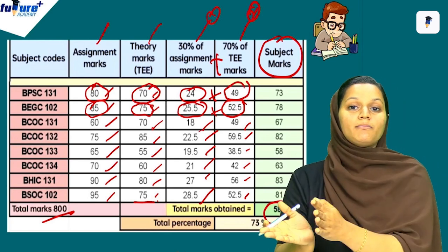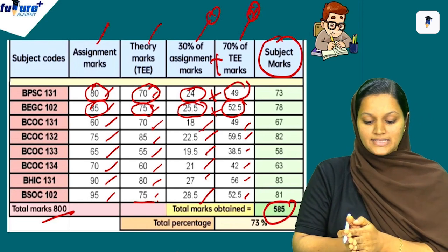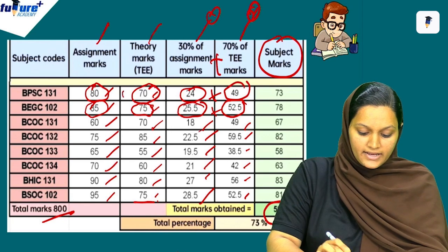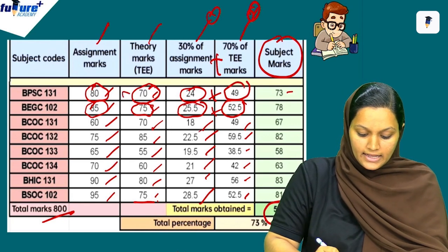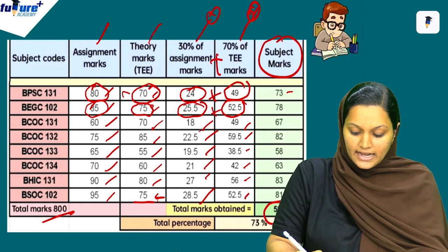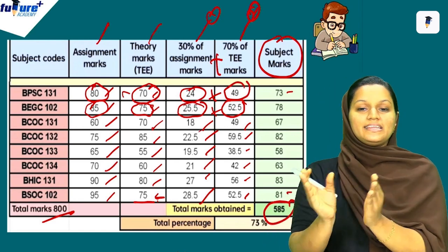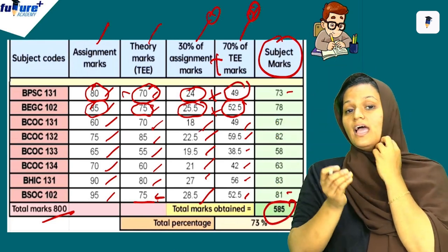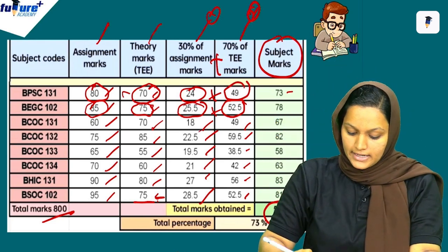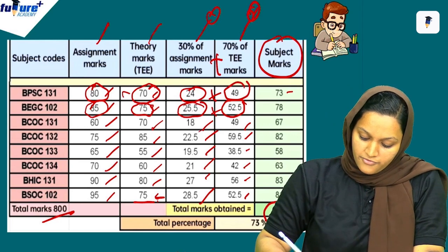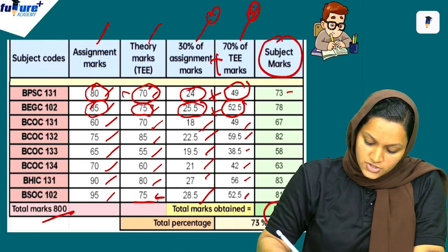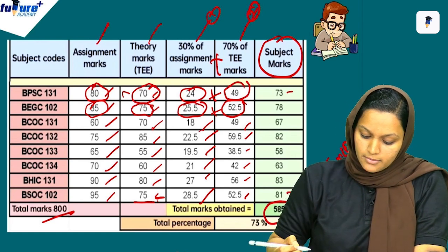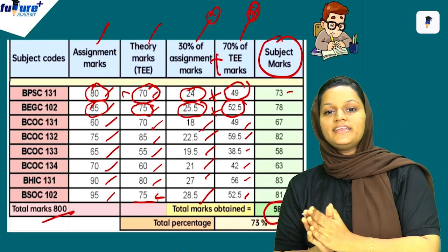We have 70% in the total. The theory is 78%, we have 73% overall, and 81% in another subject. So what do we do with this? Total is 585, divided by 800 — that is how we get 73% total percentage.